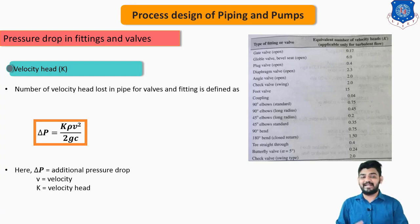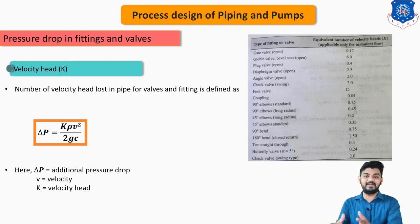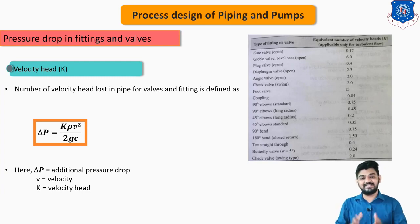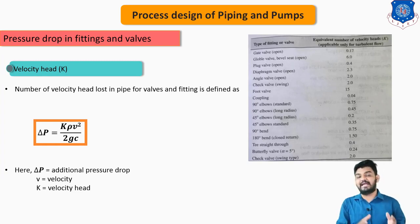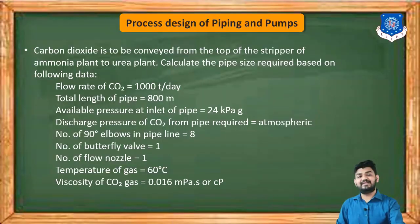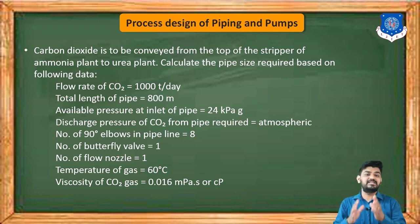Now let's solve a GTU exam problem to get a complete picture of the process design of a piping system, where we calculate both the optimum diameter and the pressure drops from the pipe itself as well as from the associated fittings and valves.